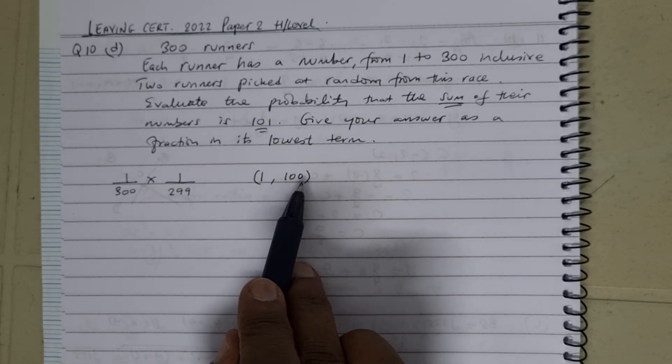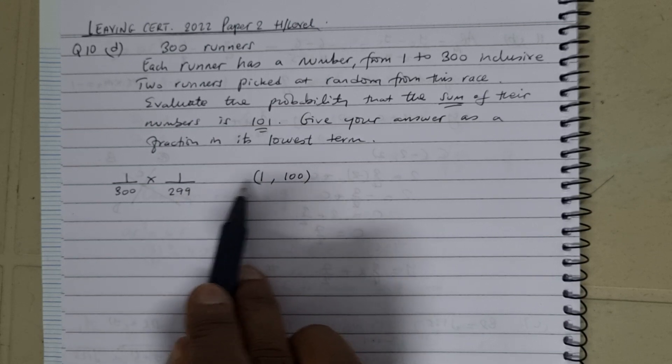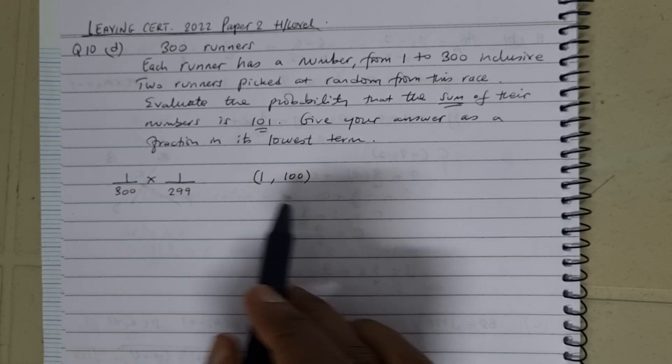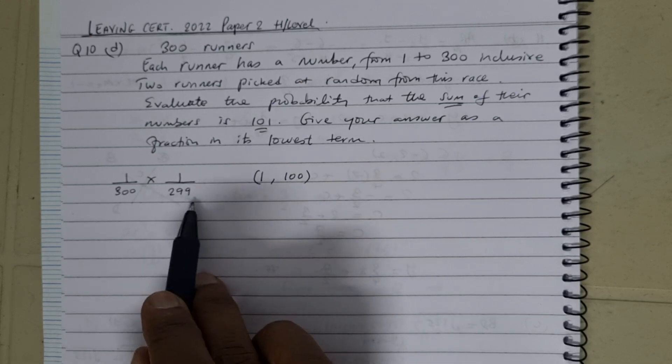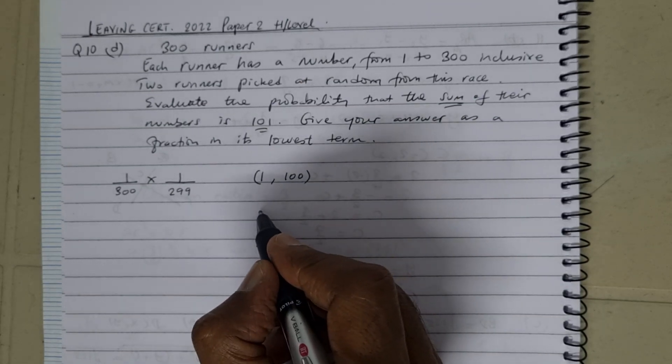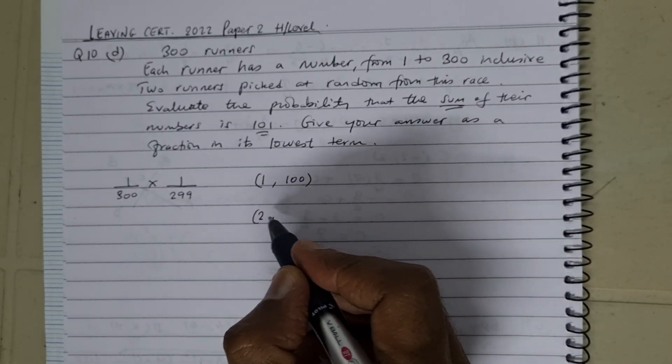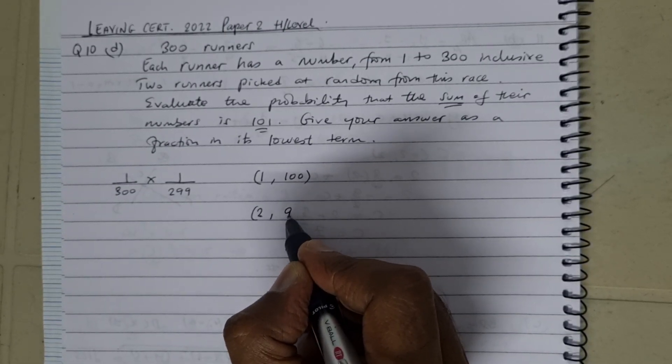The probability of picking the next runner having the number 100 is going to be 1, because he's the one that's got the number 100, divided by 299 this time, because you've already taken one person from the first possibility. That is, the first one had number 1, the second one would be again that one person, but now 299.